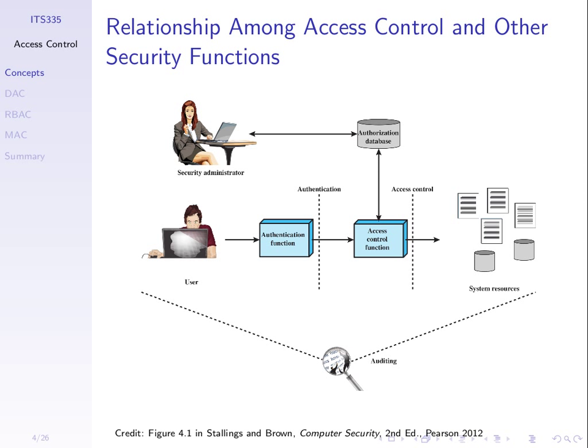When a user is authenticated to our computer system, the access control function uses this authorization information to control what the user can do on the system — which files they can access, for example. All of this we want to check that it works well. The process of auditing is checking that access control, authentication, and the database have been set up correctly to implement the policies of our organization or computer system. So we have some overall policy or goal.